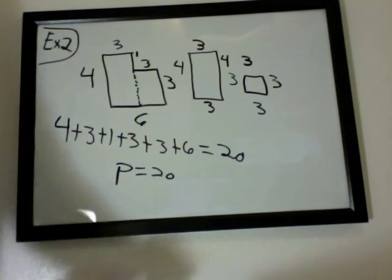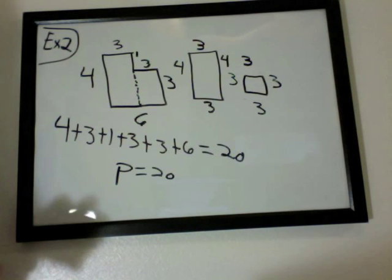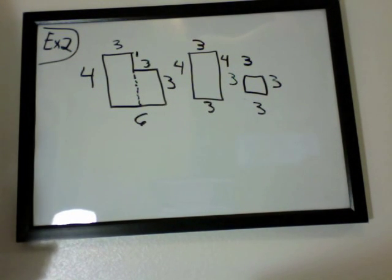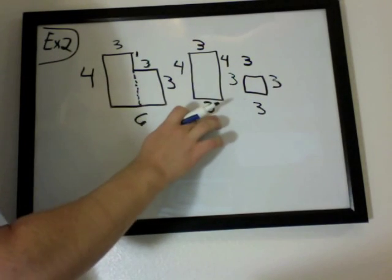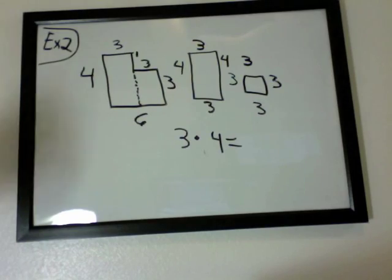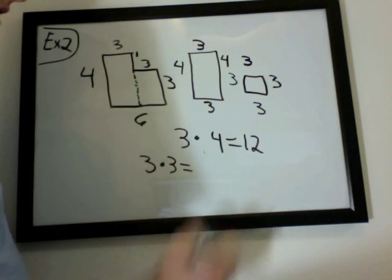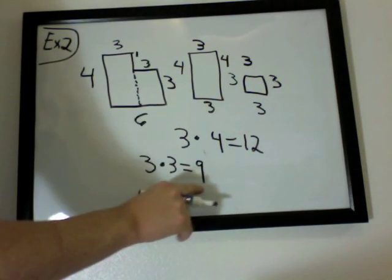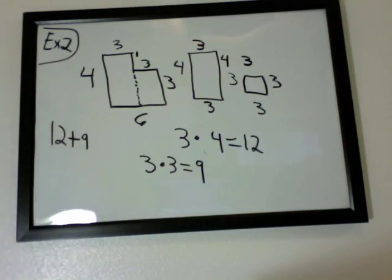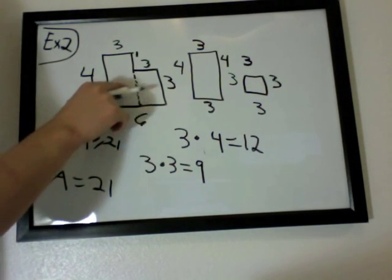To find the area, find the area of each, then add them together and you should have your area. Let's remember how to find the area. You do the length times the width. We'll call this one the width and this one the length. So 3 times 4 gives you 12. Then you have 3 times 3 and that should give you 9. Now you add these together. 12 plus 9 would equal 21. So the area would equal 21 for this weird shape.